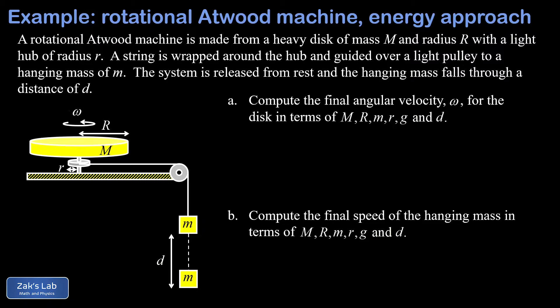This is mounted to a little hub of radius little r beneath it. There's string wrapped around that little hub and run over a light pulley to a hanging mass with a mass of little m, and we're going to release this system from rest and allow that little m to fall through a distance of d.